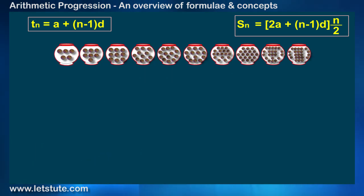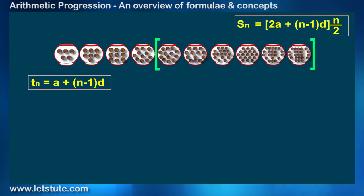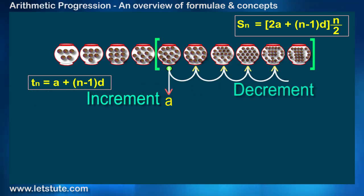We may select any range, like if I select this range, then the very first pot in that range will automatically become A, that is the first term of AP. And the increment or the decrement in the next term is represented by D.